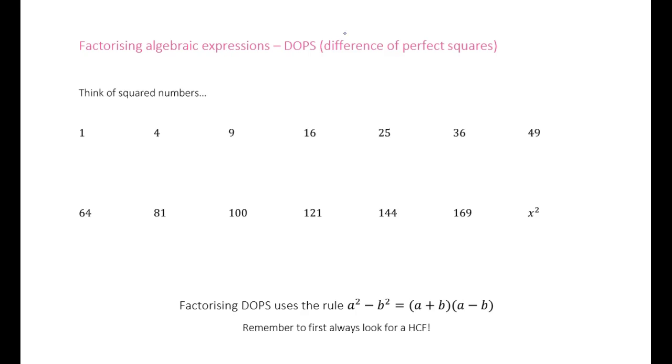Now, difference means subtraction, and perfect squares we're going to be exploring here. If we think of squared numbers, that means another number squared gives us one of these numbers.